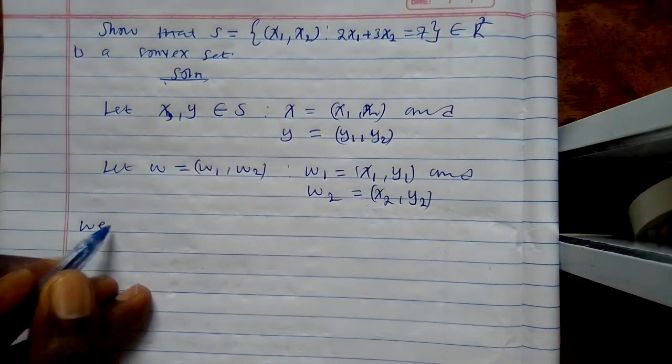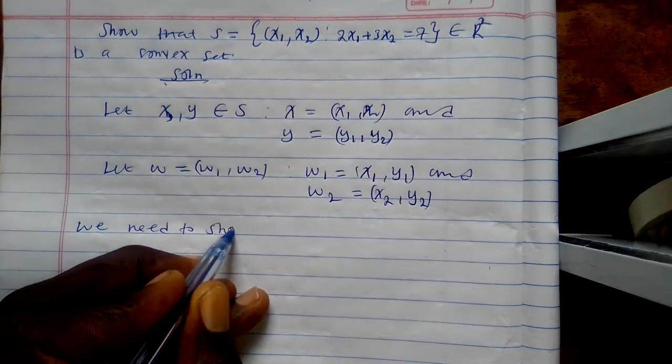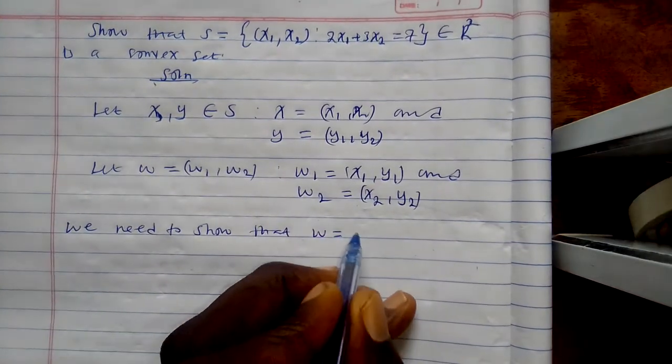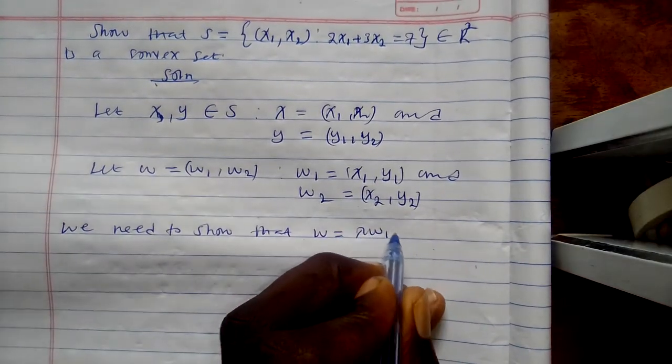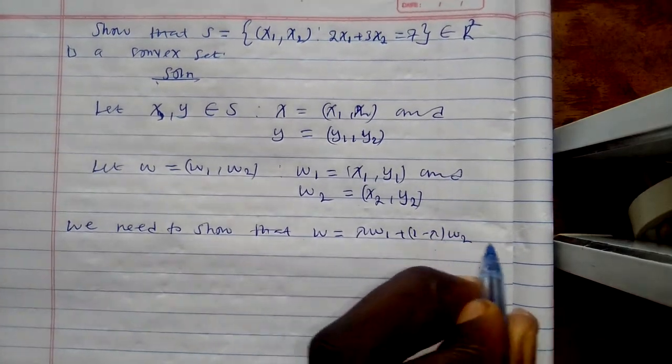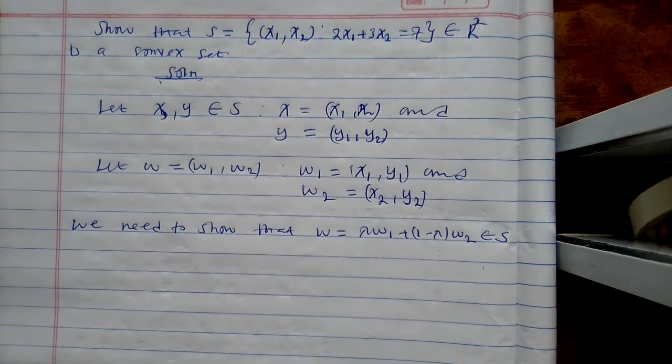We need to show that W is equal to lambda W1 plus (1 minus lambda) W2 is also in S. Is that clear?